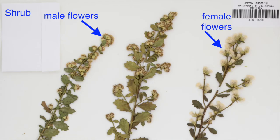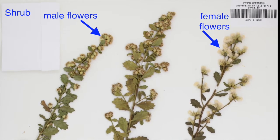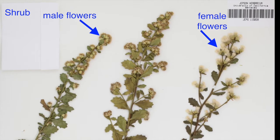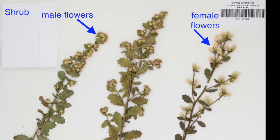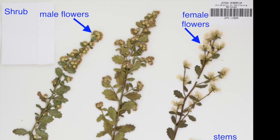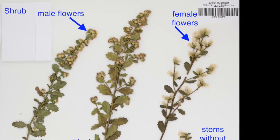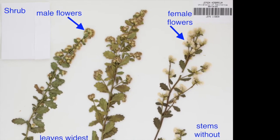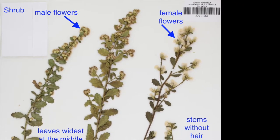Let's review the characters needed to identify Baccharis pilularis. It is a shrub, commonly found in coastal sage scrub and chaparral communities. It is a member of the sunflower family — look for the flowers grouped in heads.